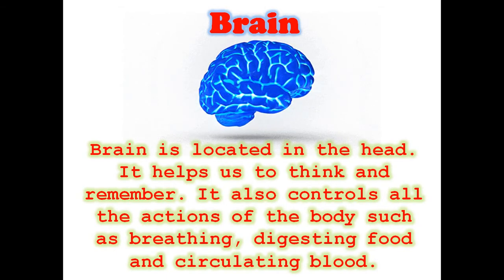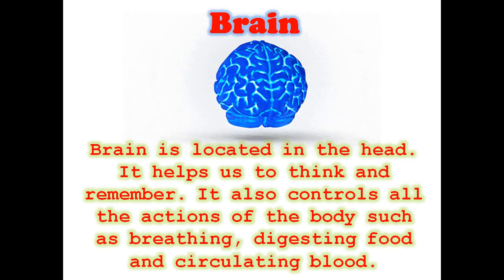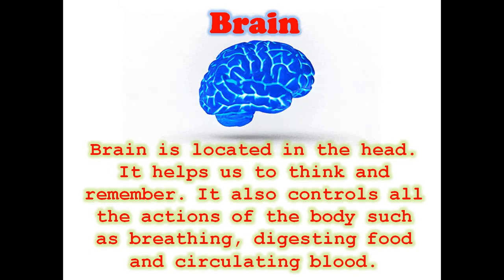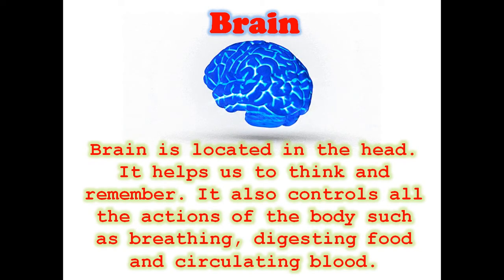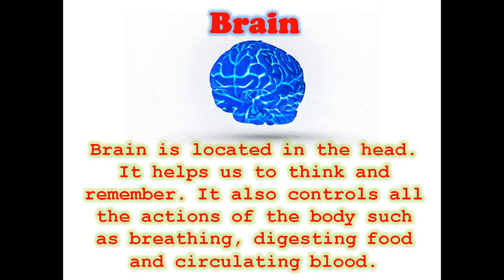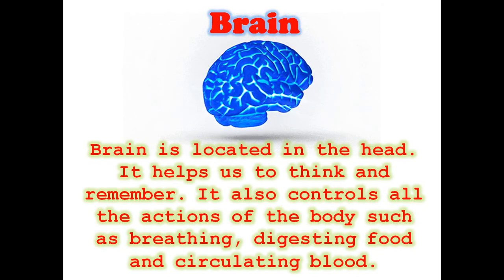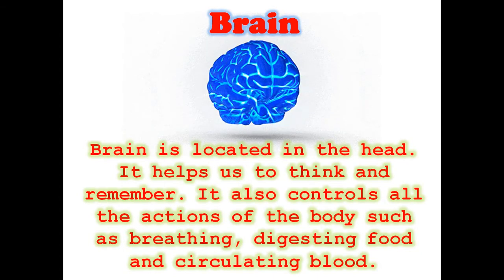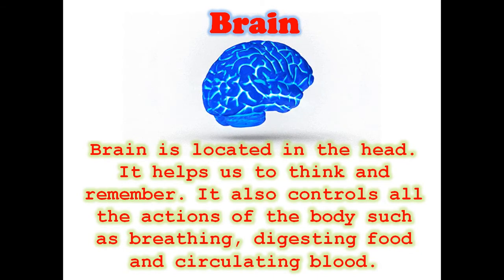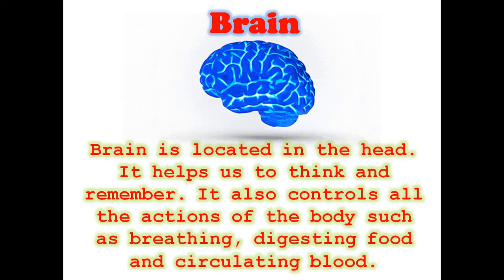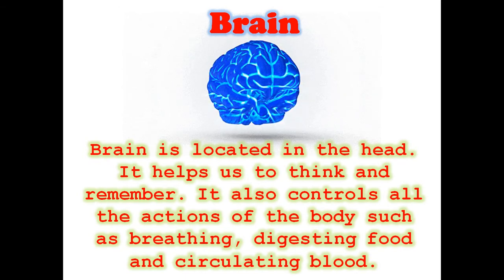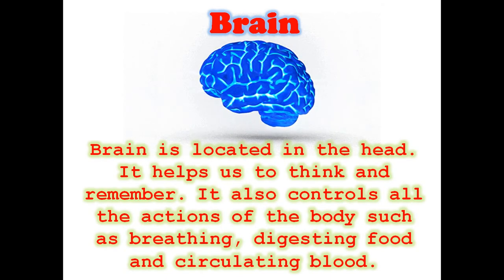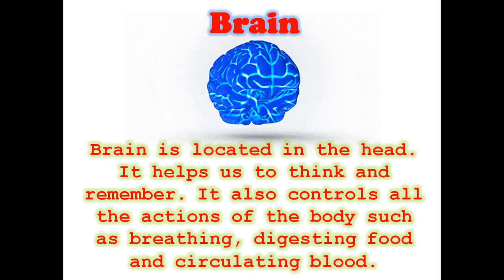The brain controls all our actions like seeing, hearing, speaking, and learning. The brain is the main part that sends messages. For example: Mukul, sit down; Mukul, stand up; Veer, stand and sing; Veer, now run — these instructions keep going through the brain. The brain keeps sending messages and all the sense organs start doing their work. So the brain is a very important organ of the human body.